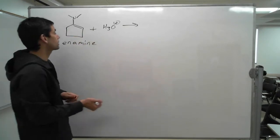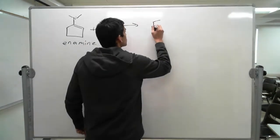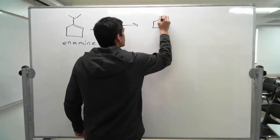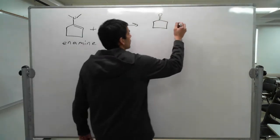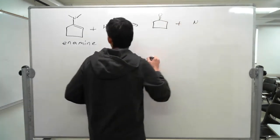Hydrolyze this enamine back to, in this case here, it's going to be a ketone, cyclopentanone, plus we'll get our amine. What type of amine we need to do that? Remember the enamines?